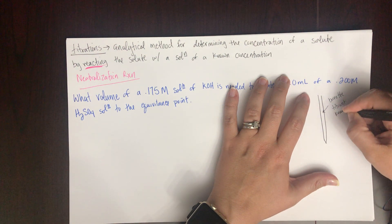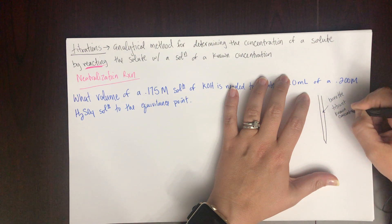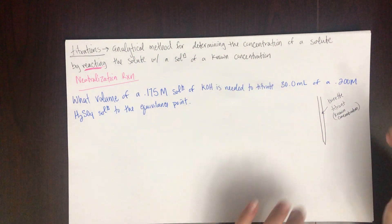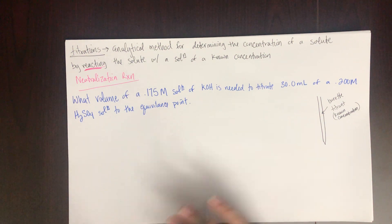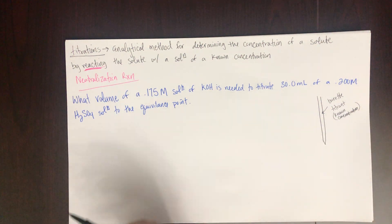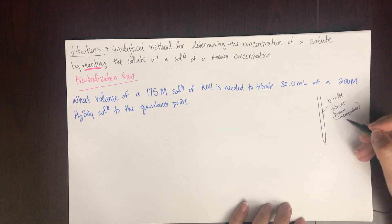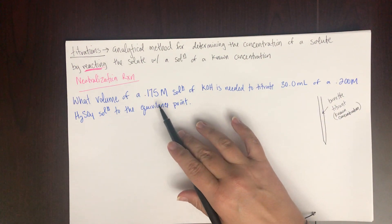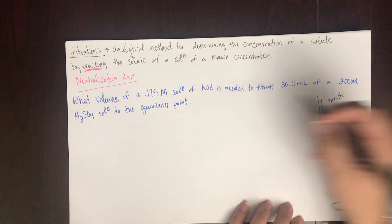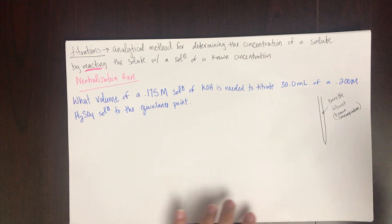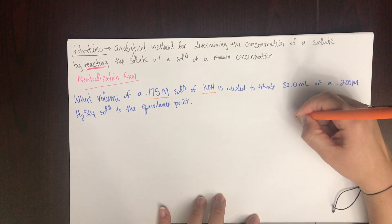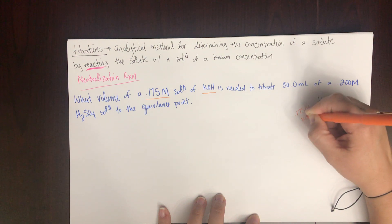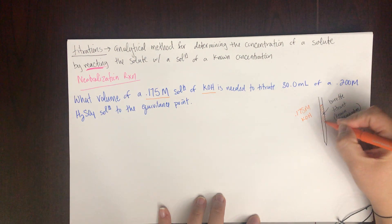The titrant is the solution of known concentration that you're adding. In this problem, the titrant is the 0.175 molar potassium hydroxide — that's what's in your burette. We're trying to figure out what volume of it we need to add.